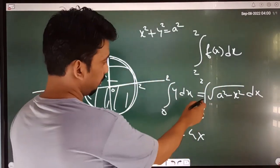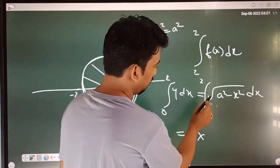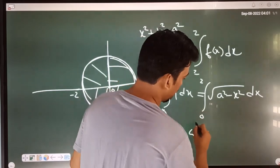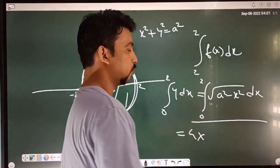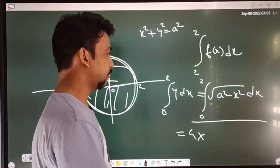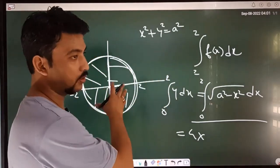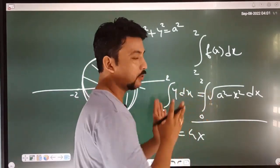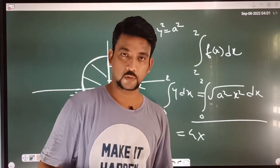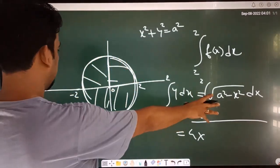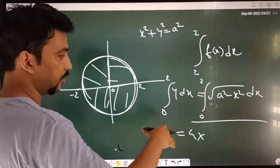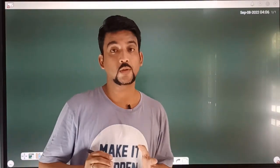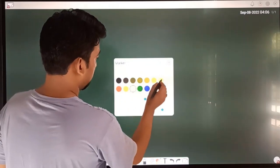This equation is our problem. This equation is set up as: 2 times the integral of root of a squared minus x squared dx. We have to work with the circle equation. Let's proceed — this equation will be evaluated, and I will give you the formula.